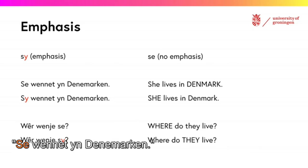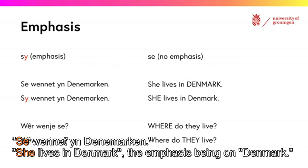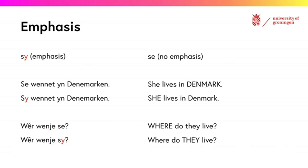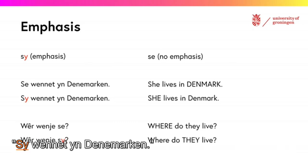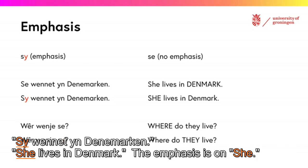'She vennet een Deinemarken' — she lives in Denmark — with the emphasis on Denmark. 'She vennet een Deinemarken' — she lives in Denmark — with the emphasis on 'she'.